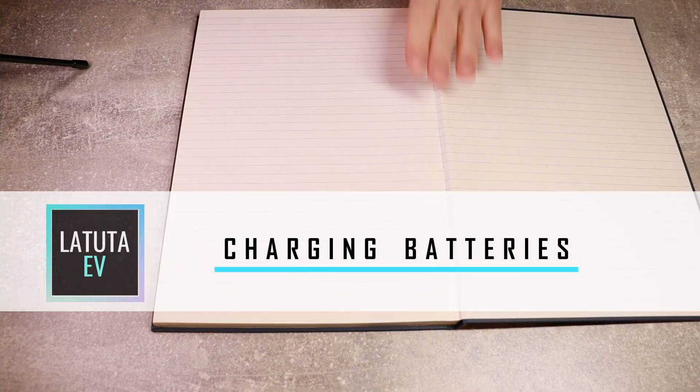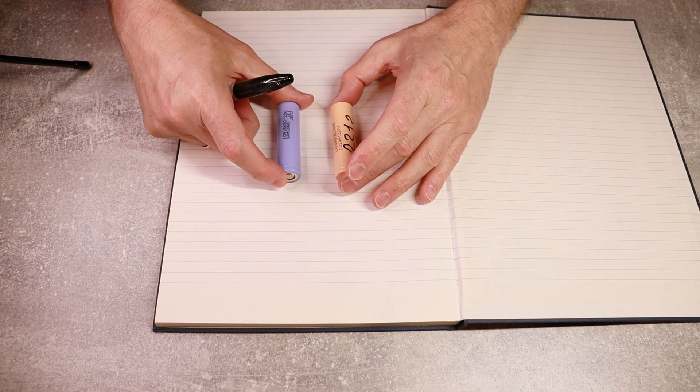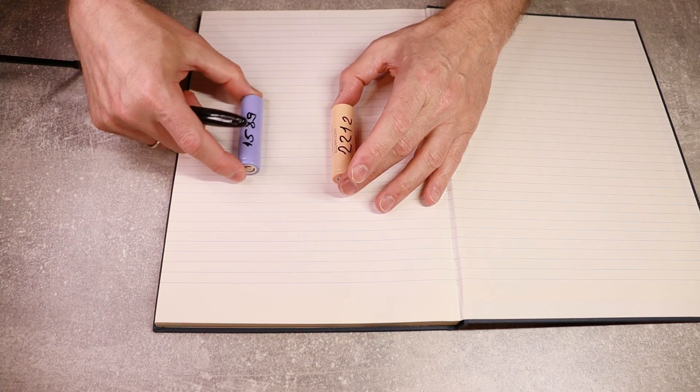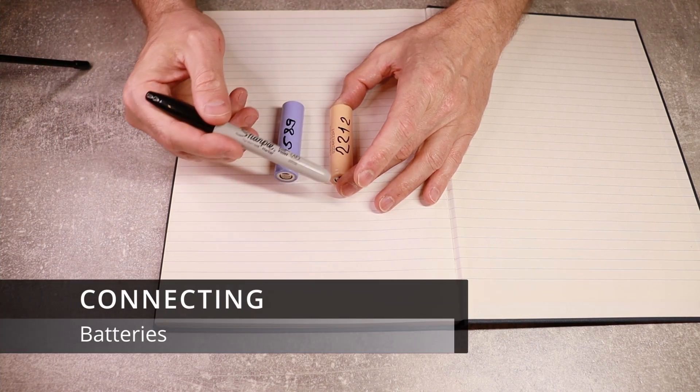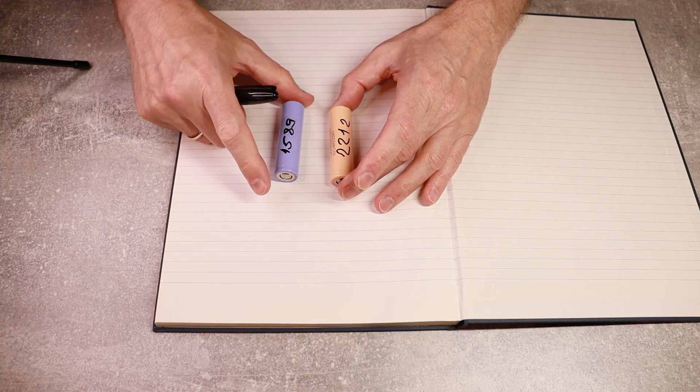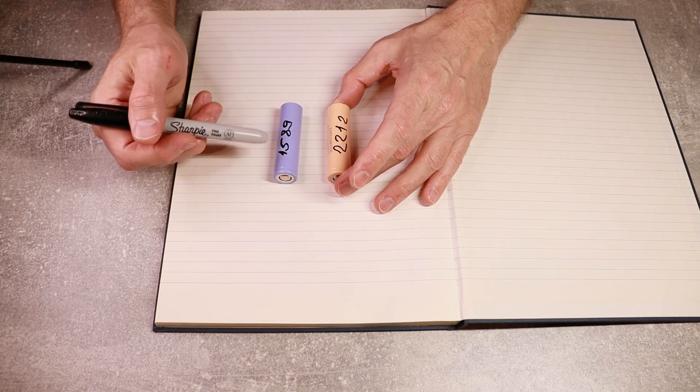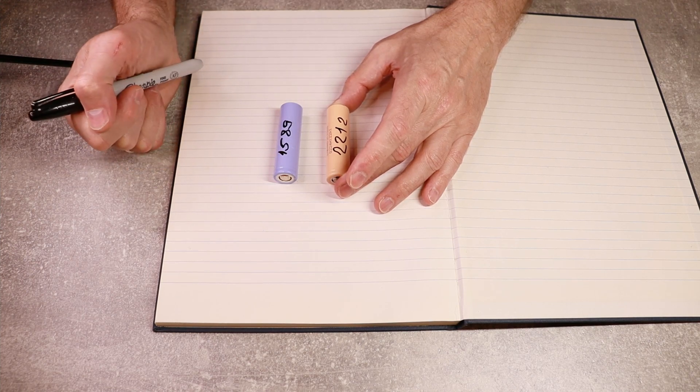Let's talk about batteries. So if we have two batteries here, one of them is larger, so it has much bigger capacity, 2,200 mAh, and another one is a bit smaller, so it only has 1,500 mAh.